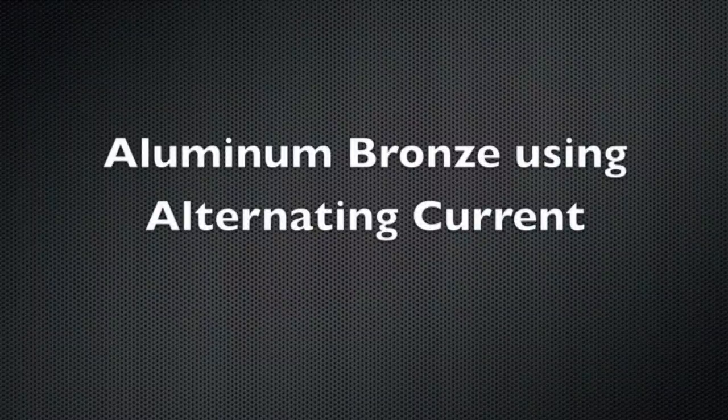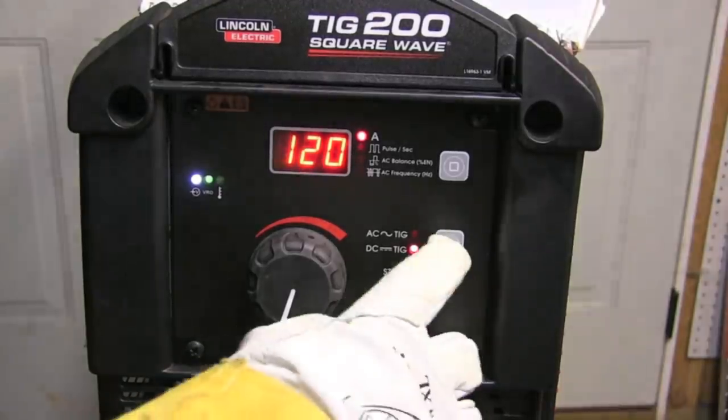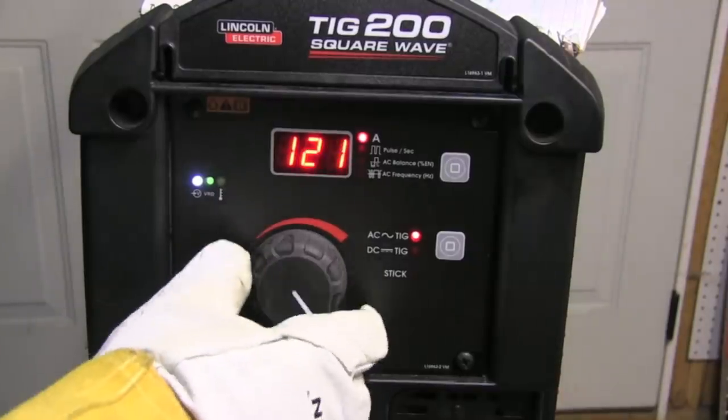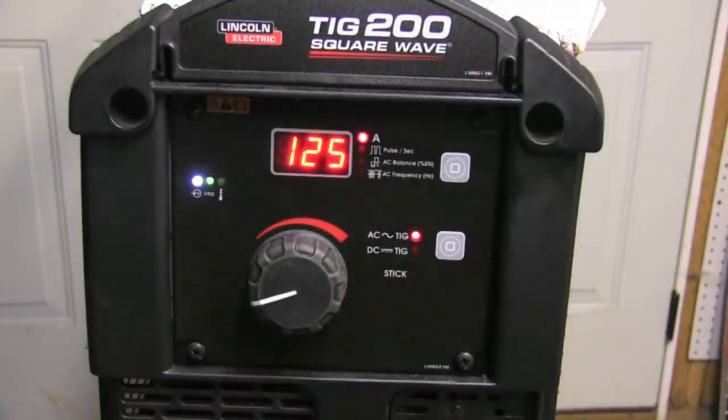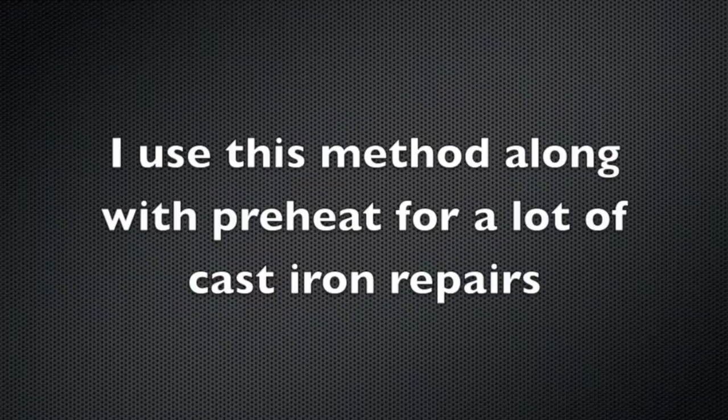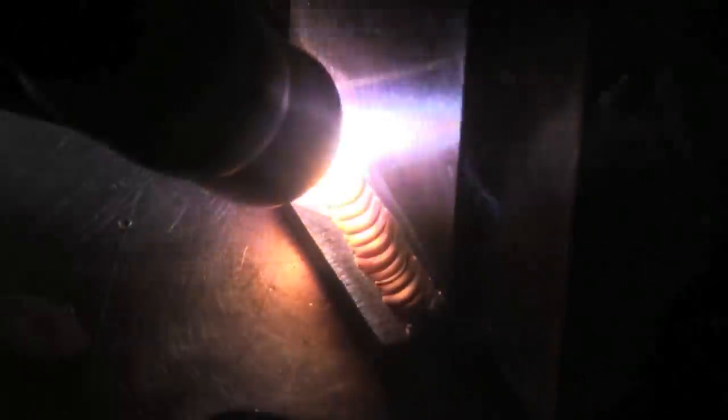Now let's go to aluminum bronze using alternating current, AC. Now the thing about this is you can use any machine, basically. But if you have an inverter, you can set the AC balance for a very high percentage of electrode negative, or very little cleaning. And it's almost like welding on DC. You can pinpoint the heat a lot. I use this method along with the preheat for a lot of general cast iron repairs.